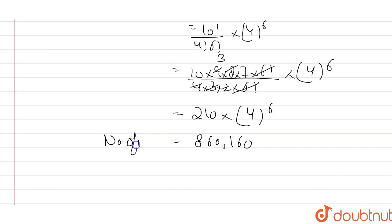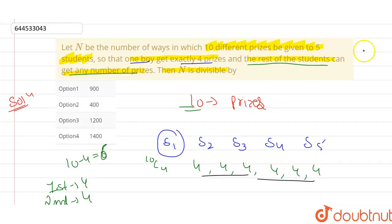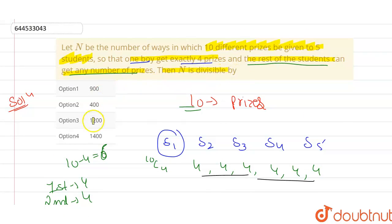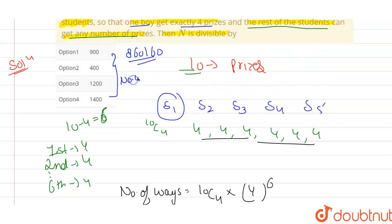So my actual number of ways n is 860160. The question asks which of the given options divides n. If you divide 860160 by each of the given values, none of them give a perfect division for this number. So basically there is no correct solution among all these options.